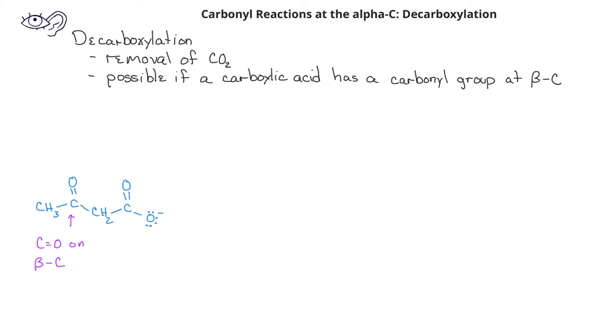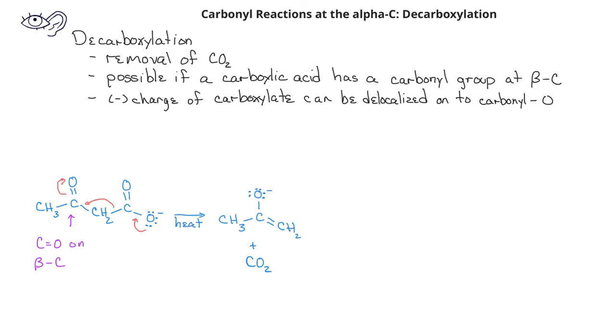When the carboxylic acid loses a proton, the negative charge can be delocalized onto the carbonyl oxygen of the beta-carbon. We then have a CO2, or carbon dioxide, group as a leaving group.